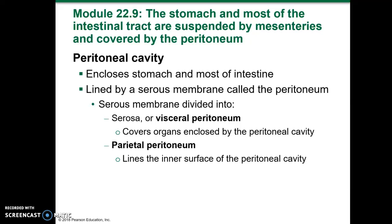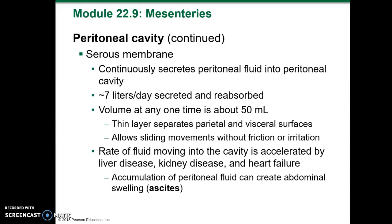The stomach and most of the intestinal tract are suspended by mesenteries and covered by peritoneum. The peritoneal cavity encloses the stomach and most of the intestine and is lined by a serous membrane called the peritoneum. The peritoneum is divided into the visceral peritoneum, which covers the organs, and the parietal peritoneum, which lines the inner surface of the cavity. The serous membrane continuously secretes peritoneal fluid — as much as seven liters per day — but it is reabsorbed, with a volume at any one time of about 50 milliliters. This thin layer allows sliding movement and reduces friction.